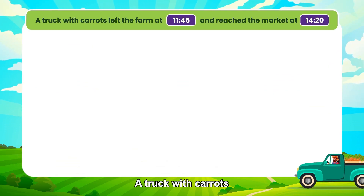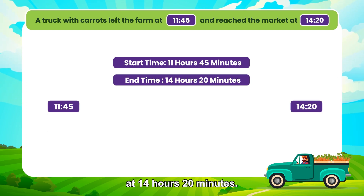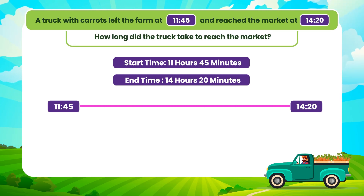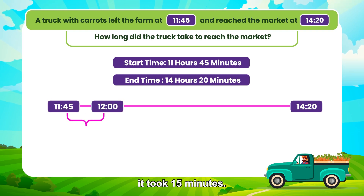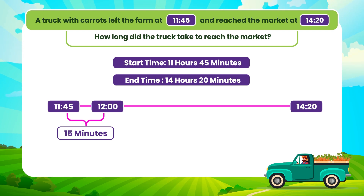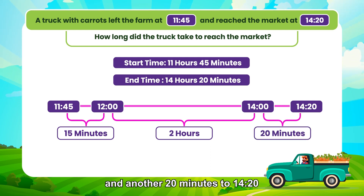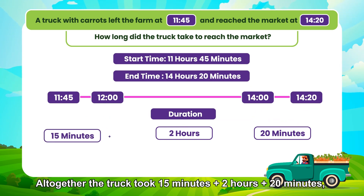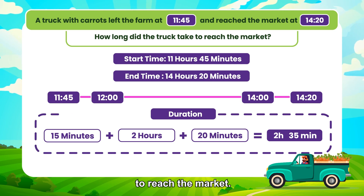A truck with carrots left the farm at 11 hours 45 minutes and reached the market at 14 hours 20 minutes. How long did the truck take to reach the market? From 11.45 to 12.00 hours, it took 15 minutes. Another 2 hours to 14.00 hours, and another 20 minutes to 14.20 hours. Altogether the truck took 15 minutes plus 2 hours plus 20 minutes — that equals 2 hours 35 minutes to reach the market.